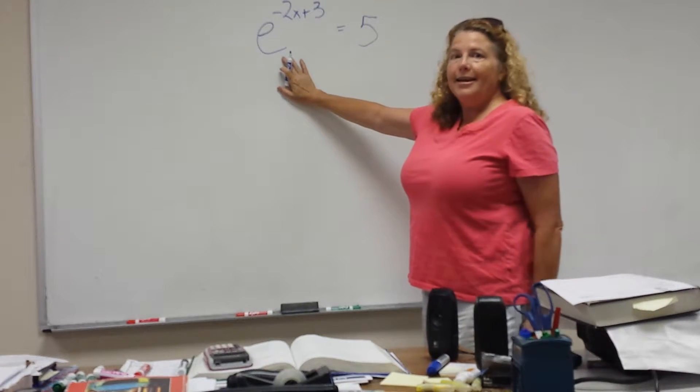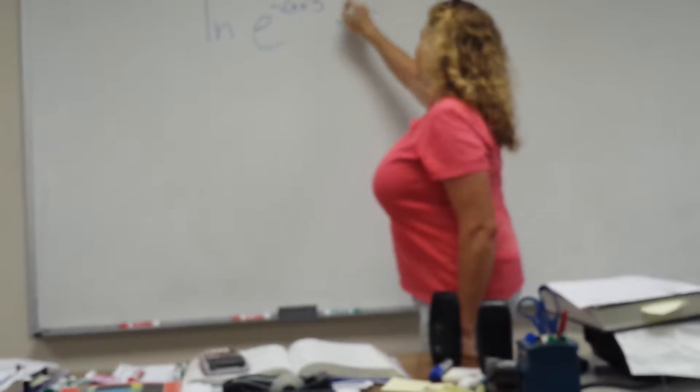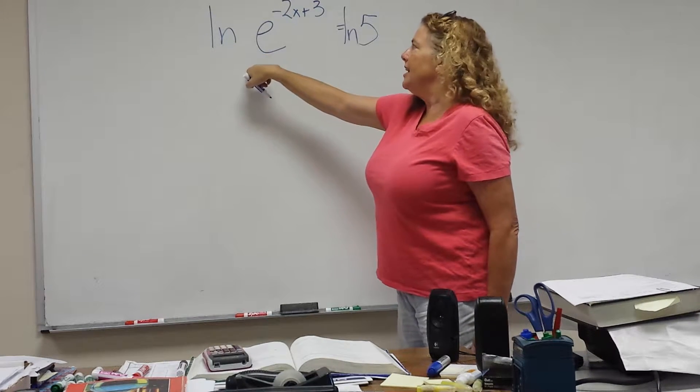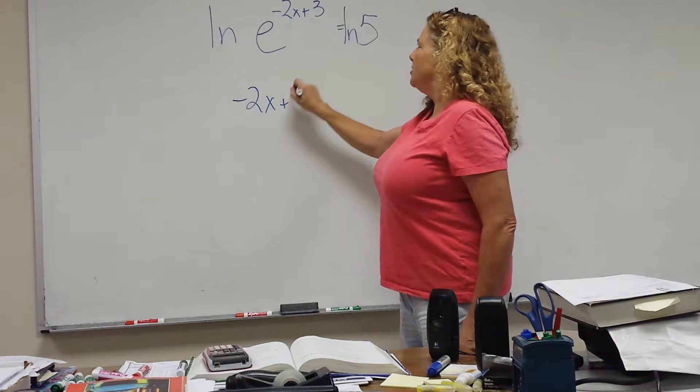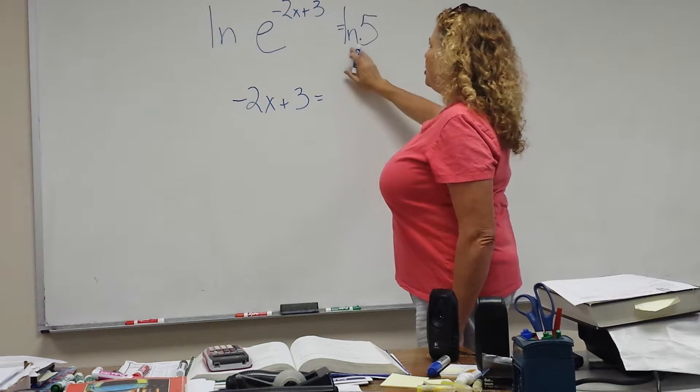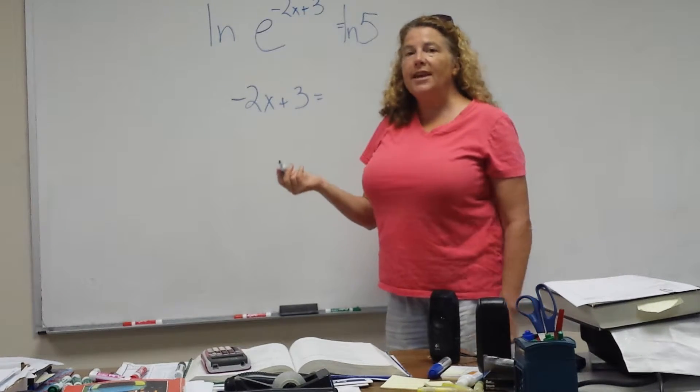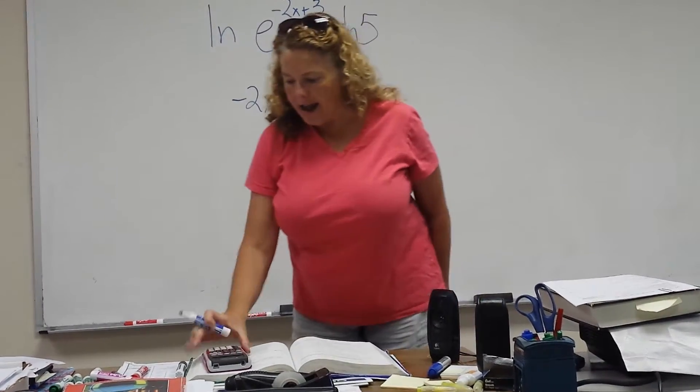Well, use ln. Because if I take the ln of this side and the ln of that side, the exponent that changes e into e to the negative 2x plus 3 is negative 2x plus 3. The exponent that changes e into 5. Now, e is approximately 2.73. So you know it's going to be a little bit bigger than 1. So that helps you to know if your answer is logical.